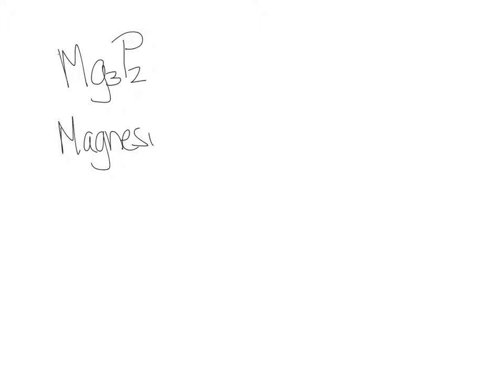For this one I'm going to use a different non-metal. Here's our metal and here's our non-metal, and I'm just going to put in these subscripts. It's still binary because there's only two elements. We name the first one — that is magnesium — and then phosphorus. Instead of being phosphorus, we're going to drop off the '-ous', and this is where this one gets weird: it becomes phosphide.